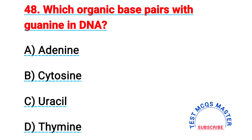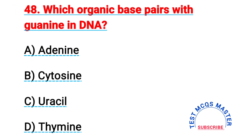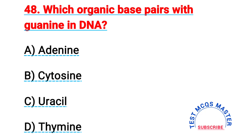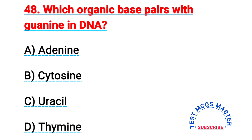Question number forty-eight: which organic base pairs with guanine in DNA? The right answer is B, cytosine.